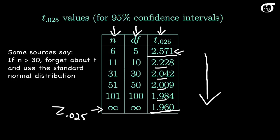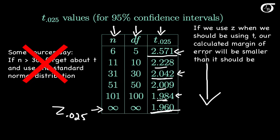Some sources go so far as to say that if the sample size is greater than 30, just forget about the t-distribution and use the standard normal distribution. But if you take statistics from me, forget you ever heard such a notion. At 30 degrees of freedom the t value is 2.042, which is quite a bit bigger than 1.96. Even at 100 degrees of freedom, the t value is still a little different. If we use the z value when we should use the t value, our calculated margin of error will be smaller than it should be. If we are sampling from a normally distributed population and using a standard deviation based on our sample's data, we should be using values from the t-distribution and not the standard normal distribution, regardless of the sample size.